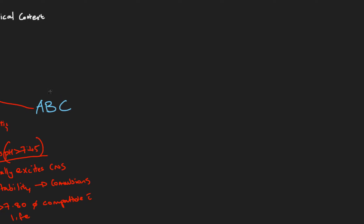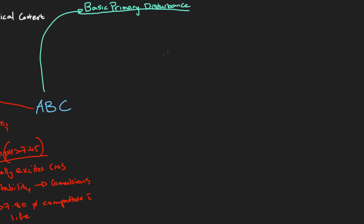In this video we're going to look at B — the basic primary disturbance. Once we have identified from the A part of the ABC that there is an acid-base disturbance, we know the blood is either normal, too acidic, or too alkalotic. The pH is either normal or out of range. If it's out of range, what is causing that — what is the primary cause of that change in pH?